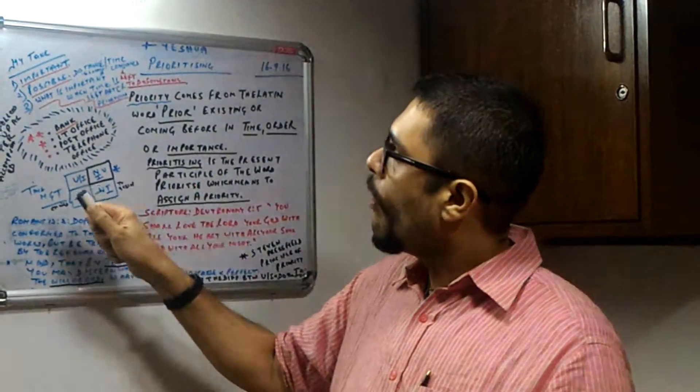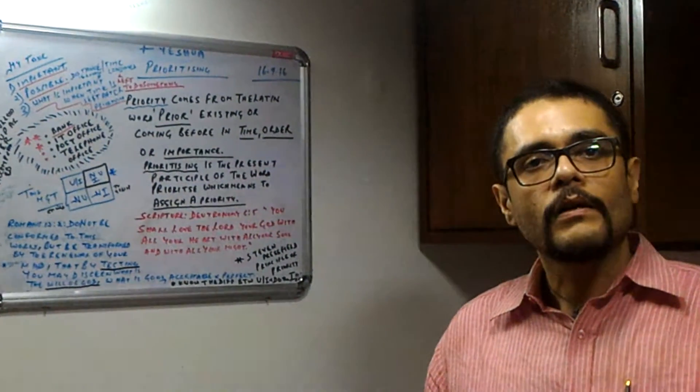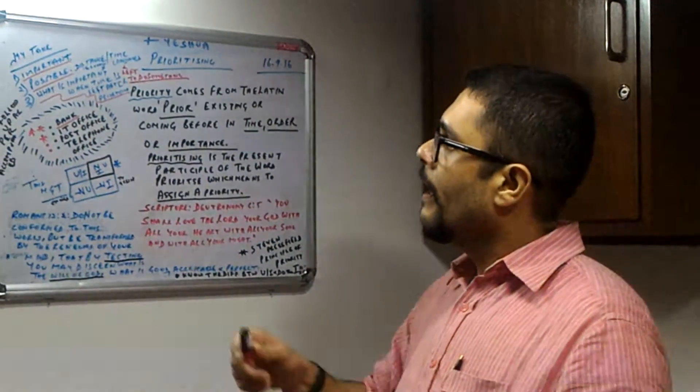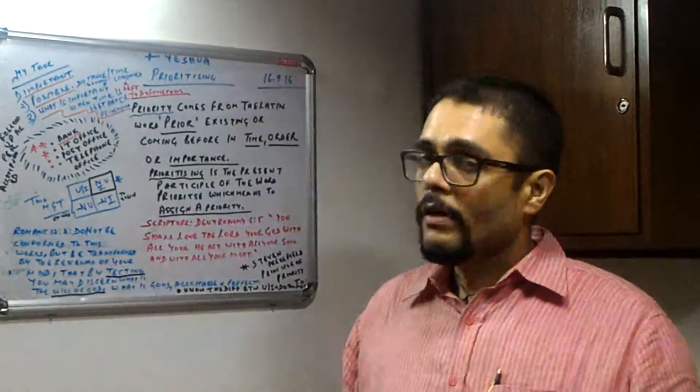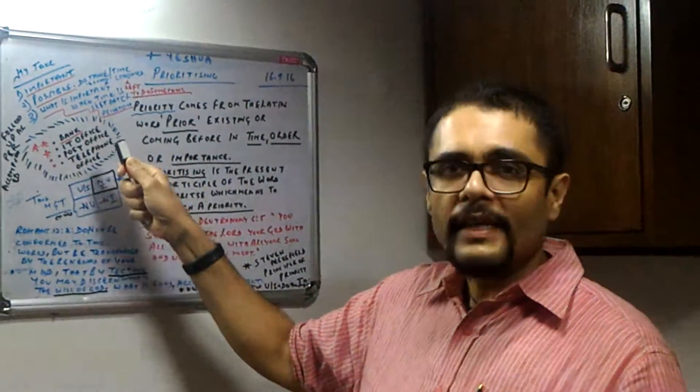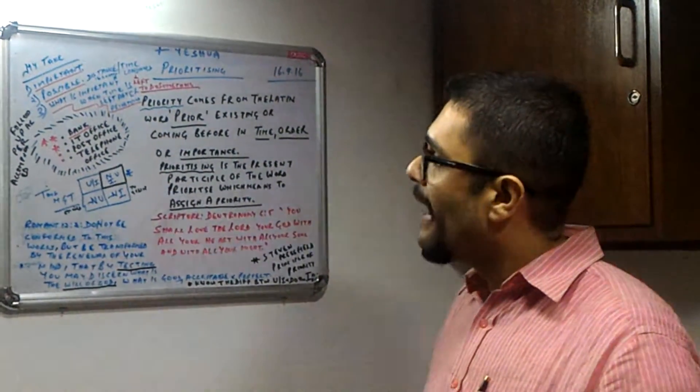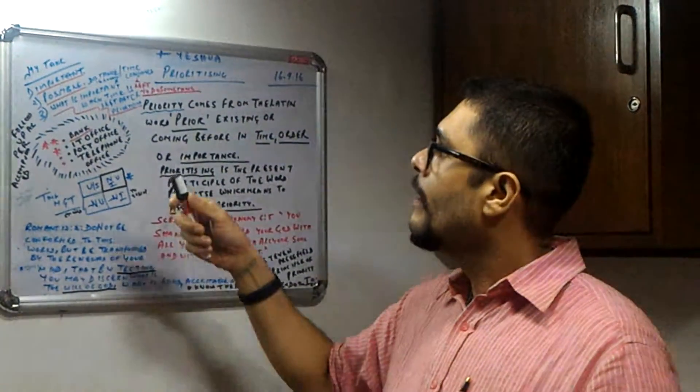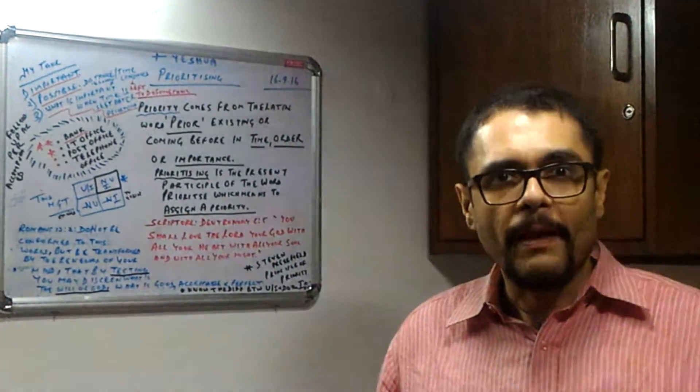So we call the officer to know about his availability. Now, he says he is busy at this point. The second calculation I do is that the RTGS or the NEFT of the bank, our bank, gets closed by around 4 PM.